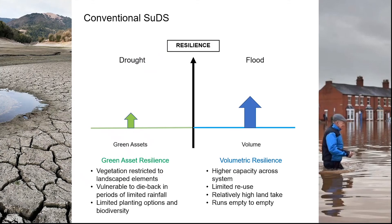Through the delivery of conventional sustainable drainage, where green infrastructure assets usually sat outside of the system or weren't wholly embedded, the resilience to flooding and drought management could be and is potentially limited.